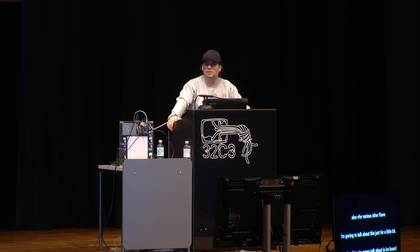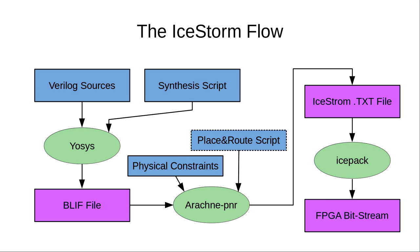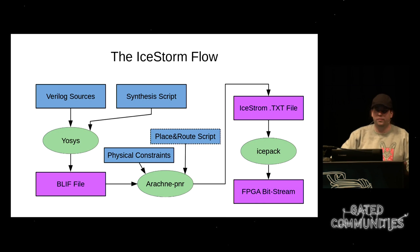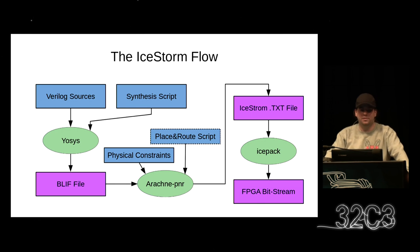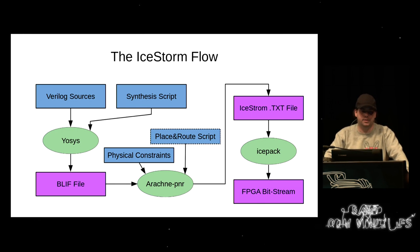This is the flow — the big overview. You start with Verilog sources and a synthesis script. Usually the synthesis script just reads the Verilog files and then executes a few macro commands that do everything necessary to synthesize for the specified target, in this case the ICE40 FPGA. The output of Yosys is a BLIF file. BLIF is a very simple netlist format and it's one of many formats that Yosys supports as backends.